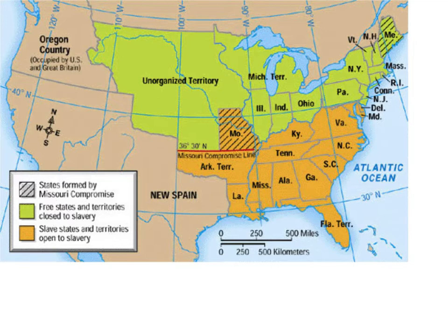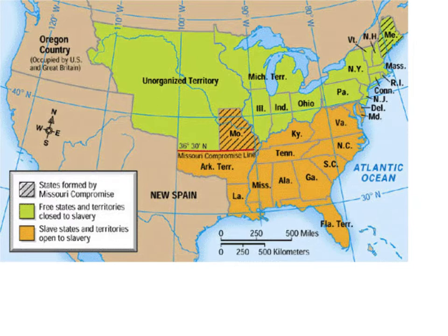In 1820, Missouri — shown as the orange state with hash marks — requests to be added to the Union as a slave state, which would outnumber the Northern states in senators and congressmen. At the same time, citizens in the territory of Maine were requesting to separate from Massachusetts and become their own state. That agreement is made to keep the balance: Missouri comes in as a slave state and Maine comes in as a free state, and that temporary balance is continued.